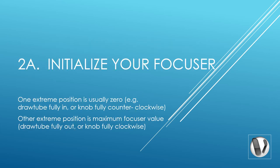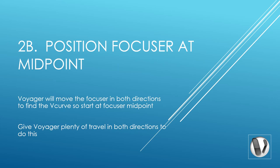It's important to initialize your focuser. Typically, when the focuser is all the way in — or the knob is counterclockwise — this is position zero. You may need to use the software that came with your focuser to do this initialization; it will move the focuser all the way in and reset the internal position counter to zero. Then move the focuser all the way out and record that maximum value — Voyager will not try to move past that number. Next, position your focuser somewhere close to the midpoint so there's enough room on either side for Voyager to move during v-curve determination without hitting the travel limits.